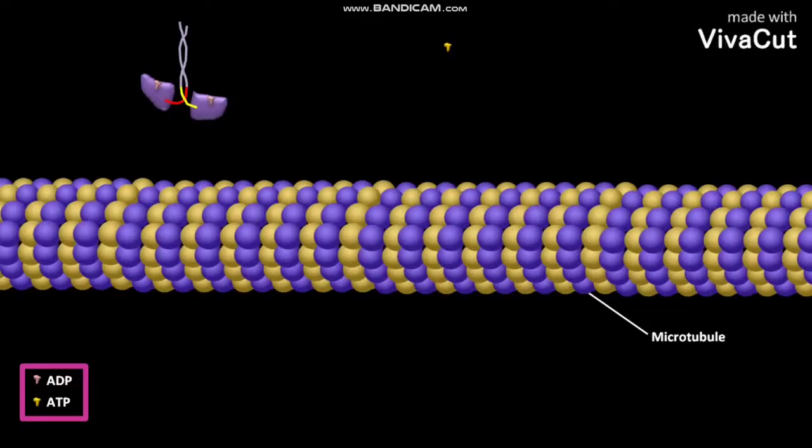The microtubule in a cell has a positive end and a negative end. The microtubule is made up of proteins like alpha tubulin and beta tubulin.